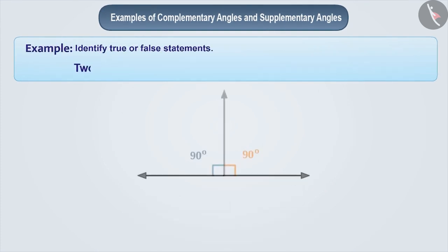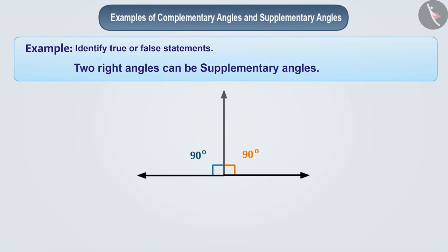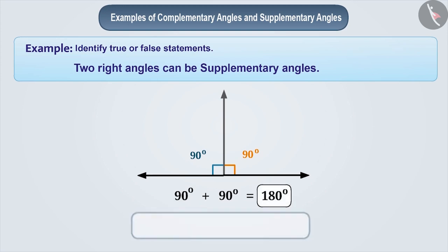Statement: Two right angles can be supplementary angles. If we add two right angles, their sum is 180 degrees. Therefore, two right angles can be supplementary angles, and the given statement is correct.